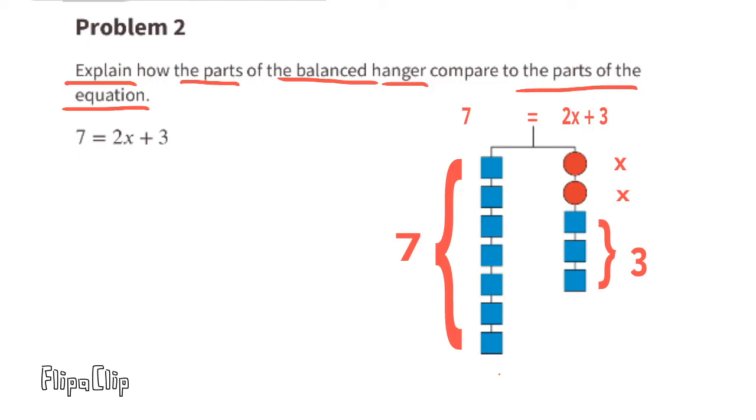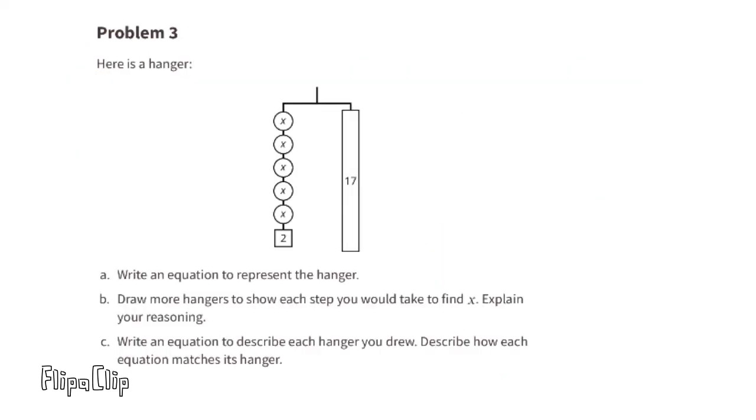Problem number three: Here is a hanger. Part a: Write an equation to represent the hanger. On the left side of the balanced hanger you have five x's, represented as 5x in an equation. Underneath the 5x's you have a box that says 2, so that is represented as plus 2. On the right side of the balanced hanger you have a bar that says 17. In the equation that means the left side equals the right side with a value of 17.